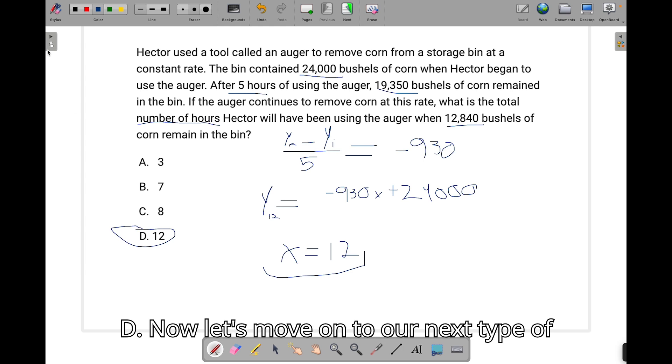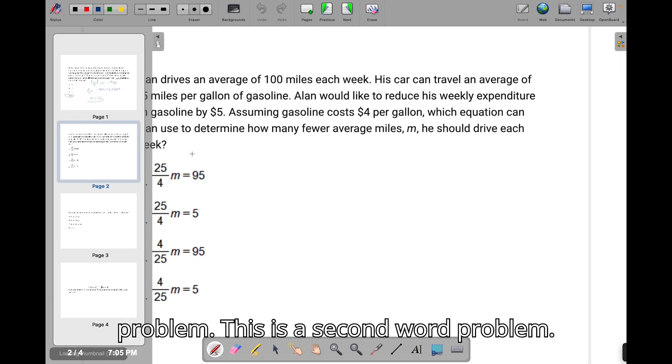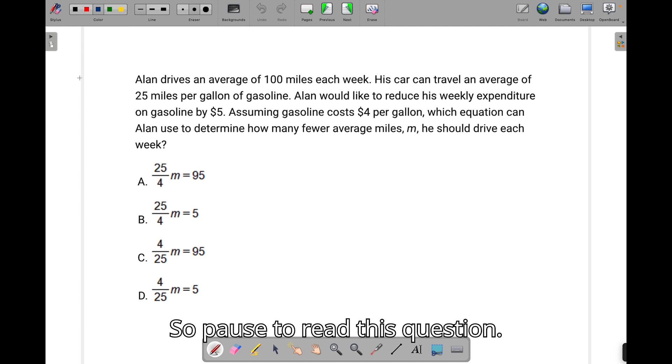Now let's move on to our next type of problem. This is the second word problem. So pause to read this question. Okay, once you pause it, we're going to get started. This is involving making the equation. He drives an average of 800 miles each week, 25 miles per gallon. He wants to spend $5 bringing down his cost, but it costs $4 per gallon. So let's look at this.